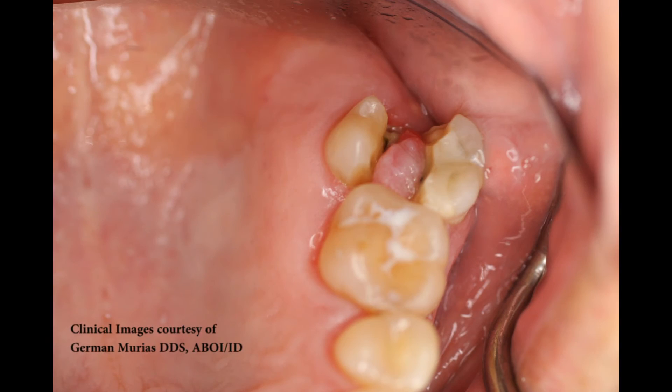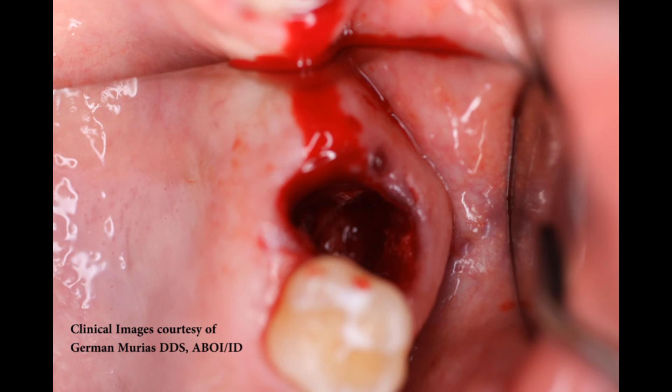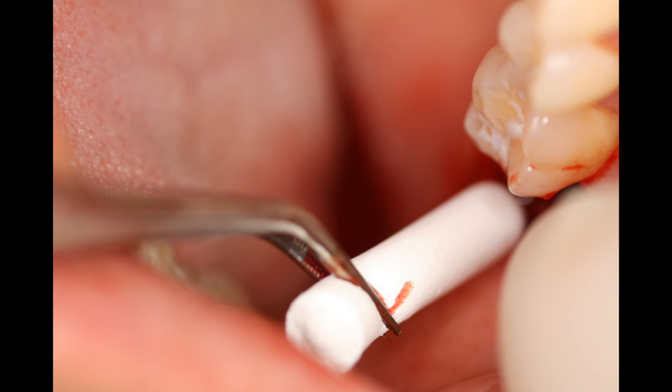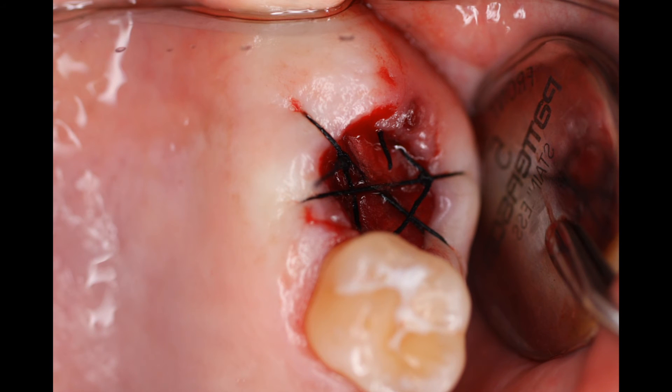In this clinical example, tooth number 15 is set to be extracted and the socket was thoroughly debrided to trigger the regional axillary phenomenon, commonly known as RAP. This procedure is known to stimulate bone formation and graft incorporation. Two slim Osteogen Bone Grafting Plugs were inserted and sutures were placed over top. Note that no membrane was used as there is no chance for particulate washout.